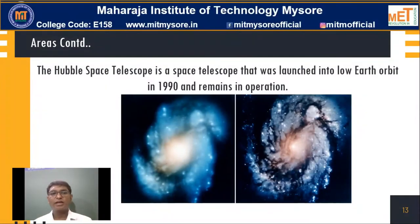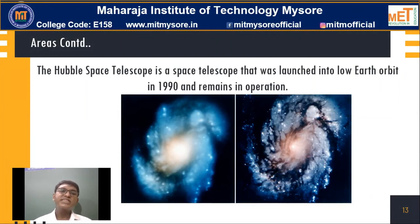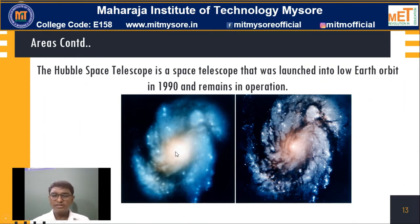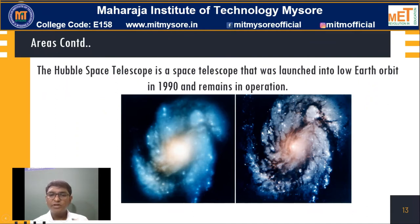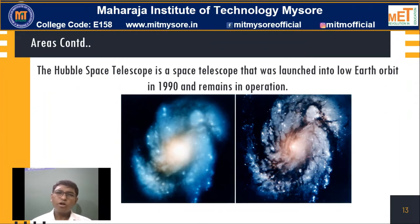The Hubble Space Telescope was launched into lower Earth orbit in 1990. The image sent by that telescope was not clear to scientists. They started applying image processing techniques and were able to get a clear image on the right side — they are able to clearly observe the stars and the actual picture of whatever image was sent by the Hubble Space Telescope. This is one of the areas where digital image processing is being used widely.